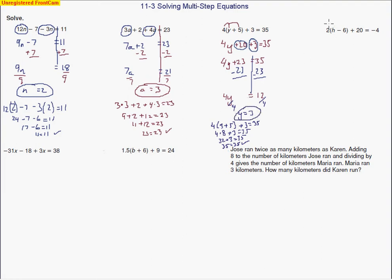Same type of problem here — we're going to use the distributive property again. We get 2h minus 12 plus 20 equals negative 4. This problem is a little trickier because we're going to end up having some opposite signs. When we have opposite signs, we subtract. I bring down that 2h, and since I have more positives than negatives, it's plus 8. So it all equals negative 4.